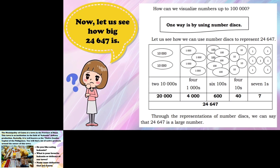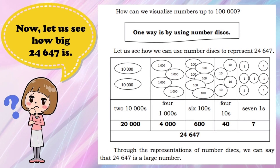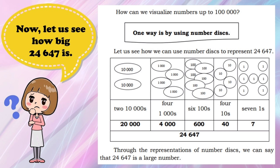Now, let us see how big 24,647 is. How can we visualize numbers up to 100,000? One way is by using number disks. Here are the steps in using number disks to represent a number: first, determine the place value of each digit; next, create a table separating the different place values of the number.